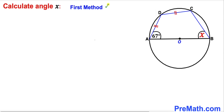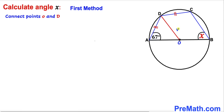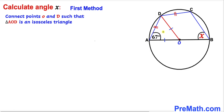Here's our very first step: let's connect center O with vertex D. Now we can see that OA and OD are both radii of the circle, so they are equal in length. Therefore triangle AOD is an isosceles triangle, meaning these two base angles are congruent. We know angle OAD is 67 degrees, so the other base angle is 67 degrees as well.